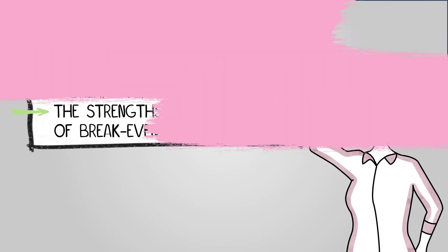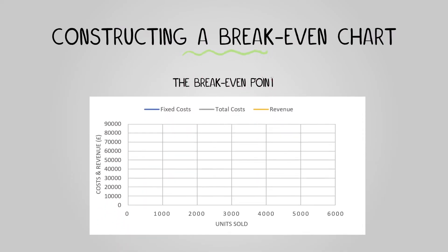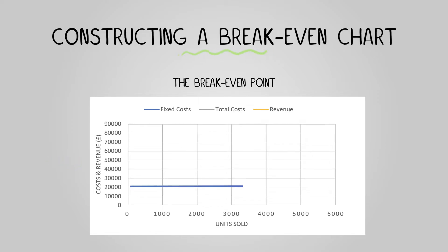You can calculate the break-even point of a business by creating a graph showing how costs change according to the output level. To create a break-even chart, you need to follow these steps: draw a chart with the horizontal axis showing the business output in units and the vertical axis showing the revenue.